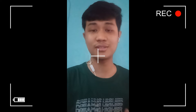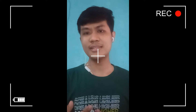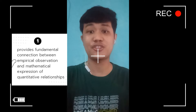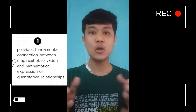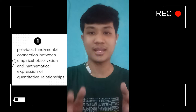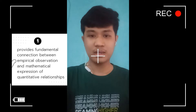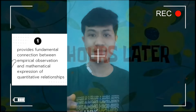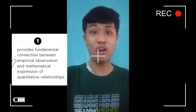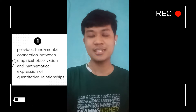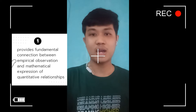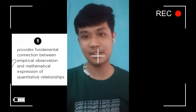Let me explain three things. First, quantitative research gives a specific measurement to something, because there are things that we need to give a specific measurement to. For example, to what extent? How long? How far? And here, quantitative research gives connection to our empirical observations with our mathematical expressions. And that is the first importance of quantitative research.